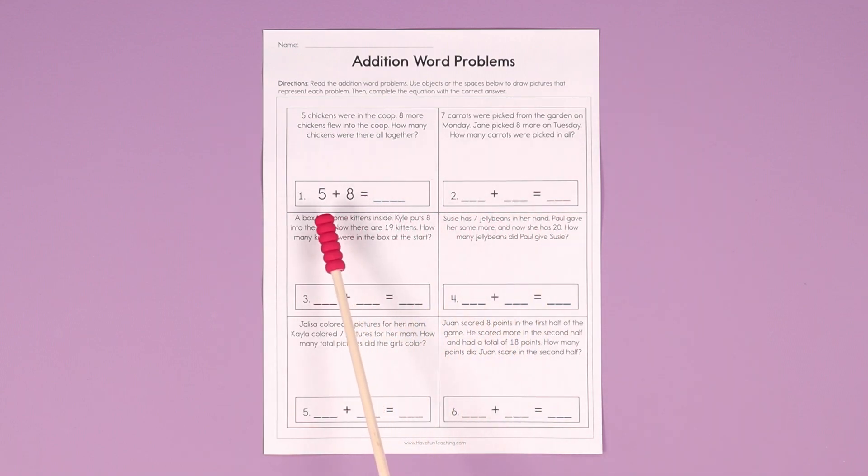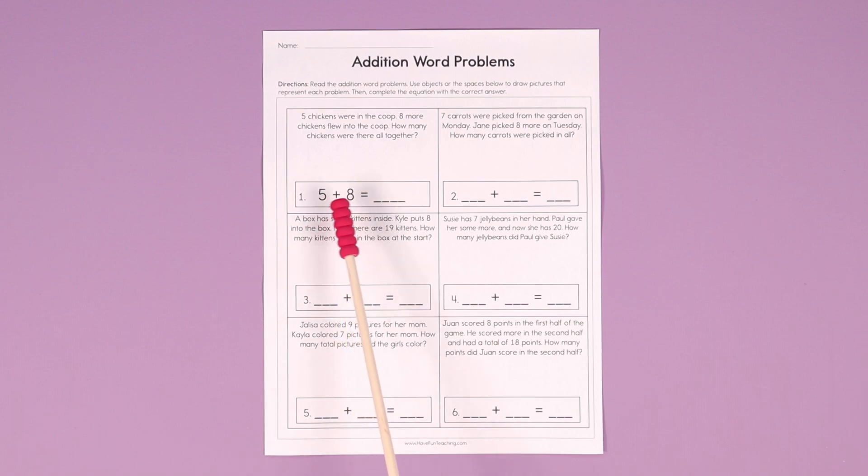So in this case, it's a single digit addition problem. Five plus eight equals 13.